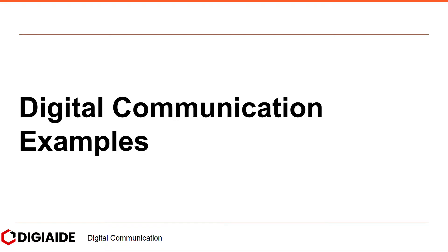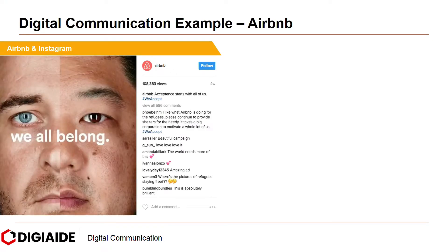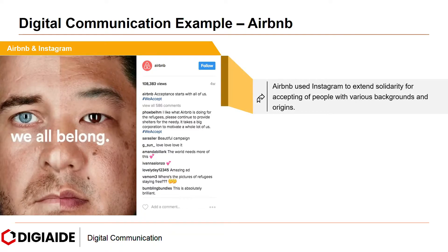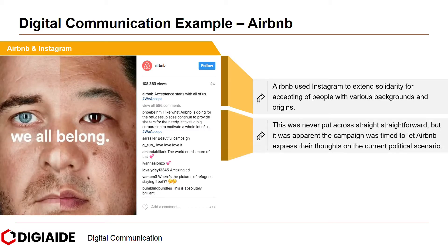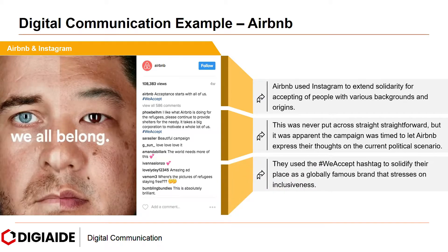Moving on to some digital communication examples. Starting with Airbnb and Instagram: Airbnb used Instagram to extend solidarity for acceptance of people with various backgrounds and origins. This was not put across straightforwardly, but it was apparent that the campaign was timed to let Airbnb express their thoughts on the current political scenario. They used the hashtag #WeAccept to solidify their place as a global famous brand that stresses on inclusiveness. A political expression can work or fail miserably in marketing, but Airbnb effectively took advantage of this trending subject.